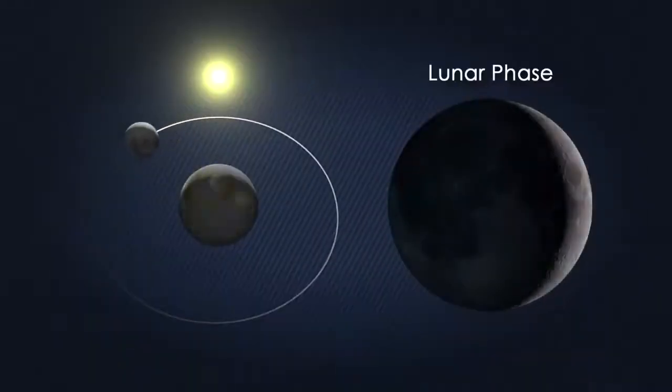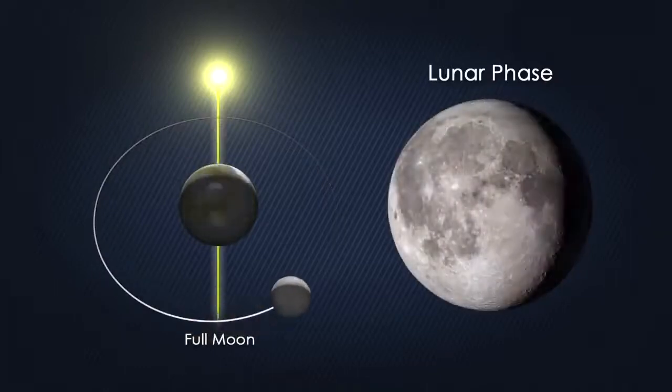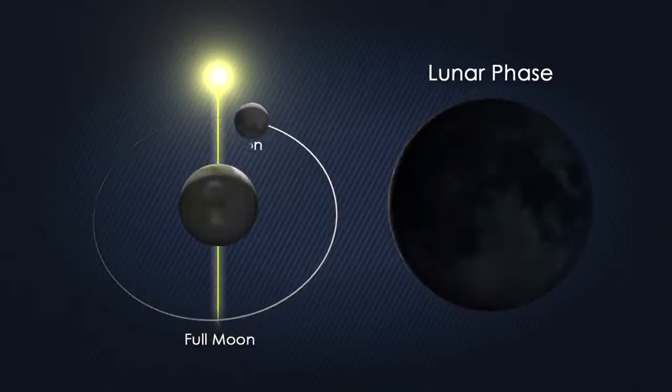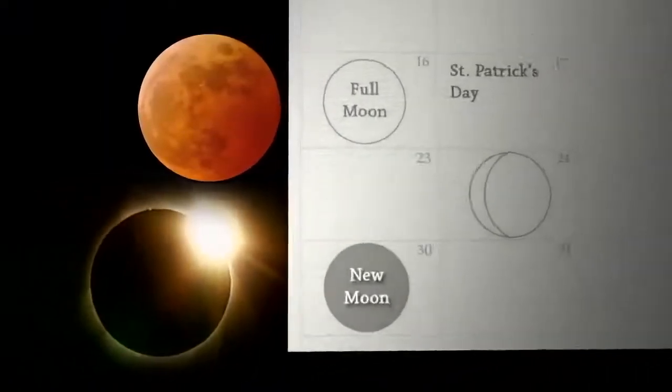But the moon circles the Earth every month as it cycles through its phases, lining up at both full moon and new moon. So why don't eclipses happen twice a month?